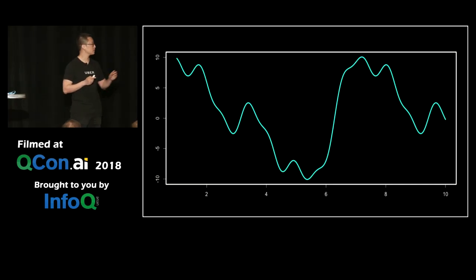Let's look at an example. If you look at this time series data, the x-axis is time, the y-axis is value. Can you predict what's going to happen later? It looks like a pretty irregular time series, right? But is it?